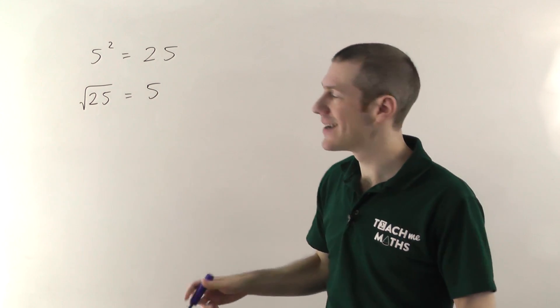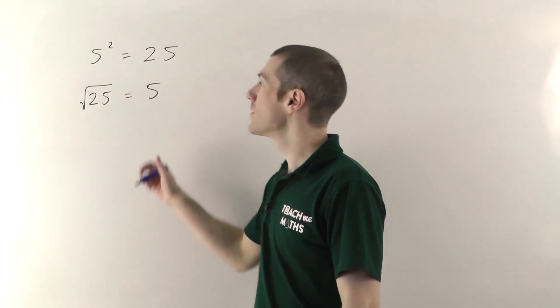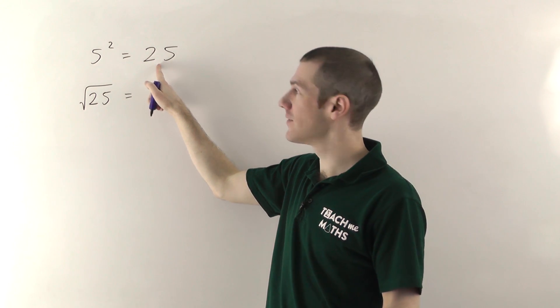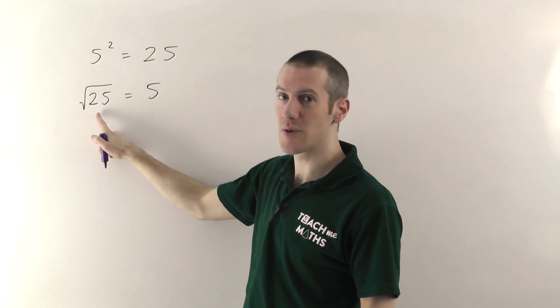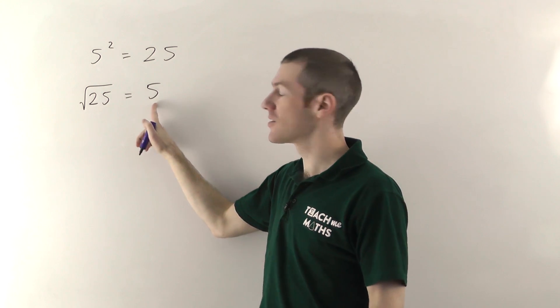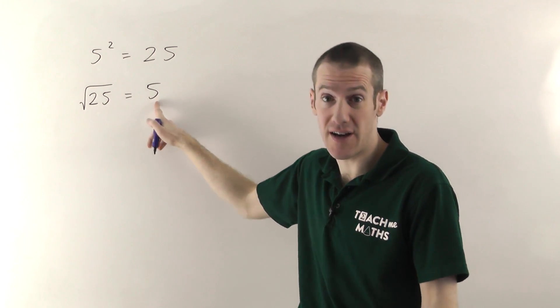As I say, square rooting is the opposite of squaring. So if you start off with 5 and you square it you get 25. If you then square root 25 you get back to where you started. It's the opposite of squaring so you get back to 5 in this case.